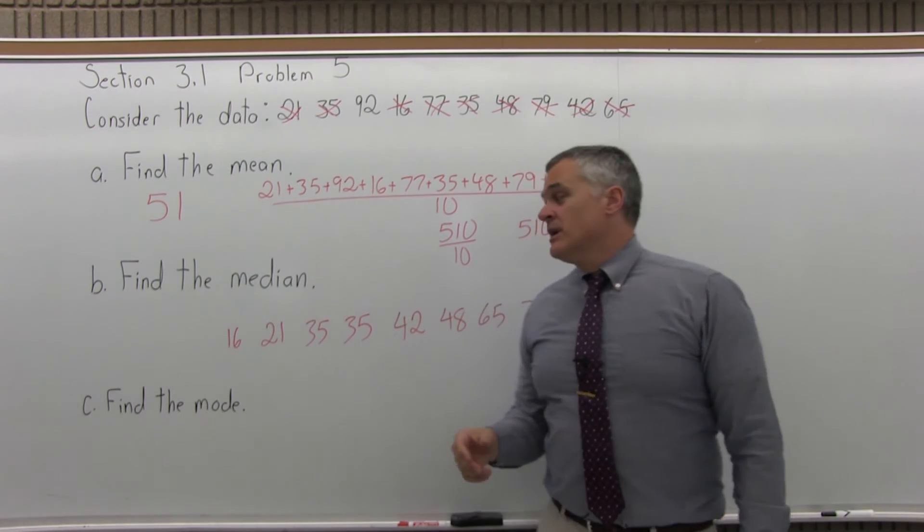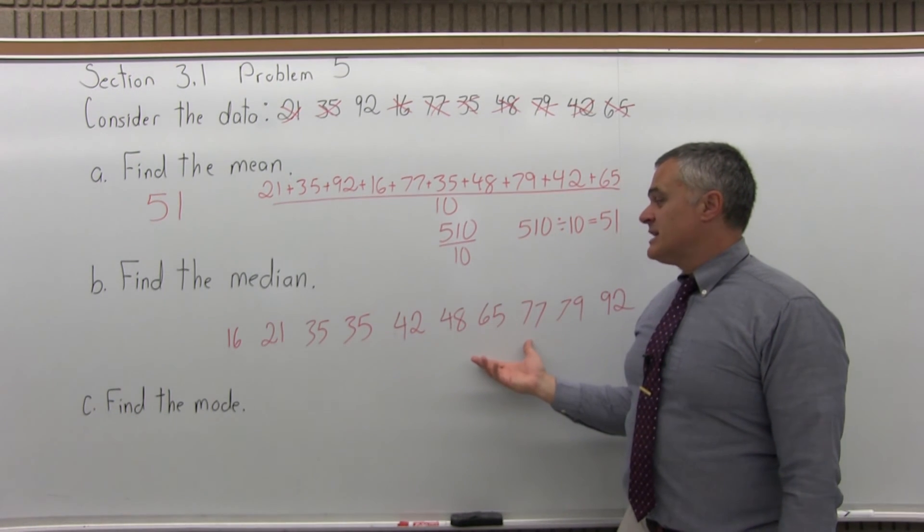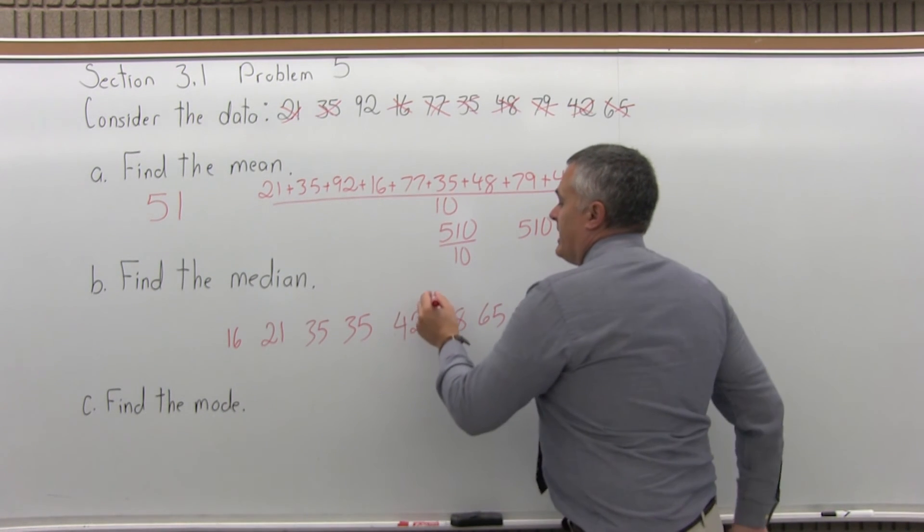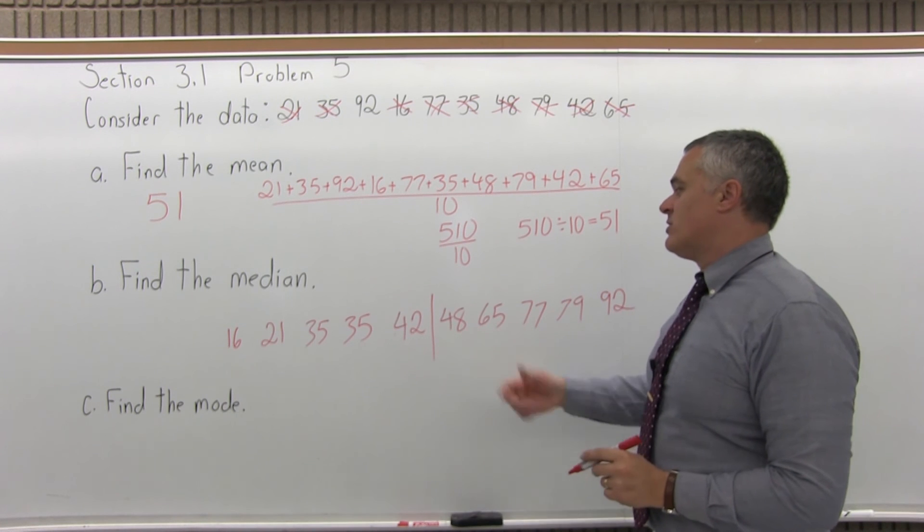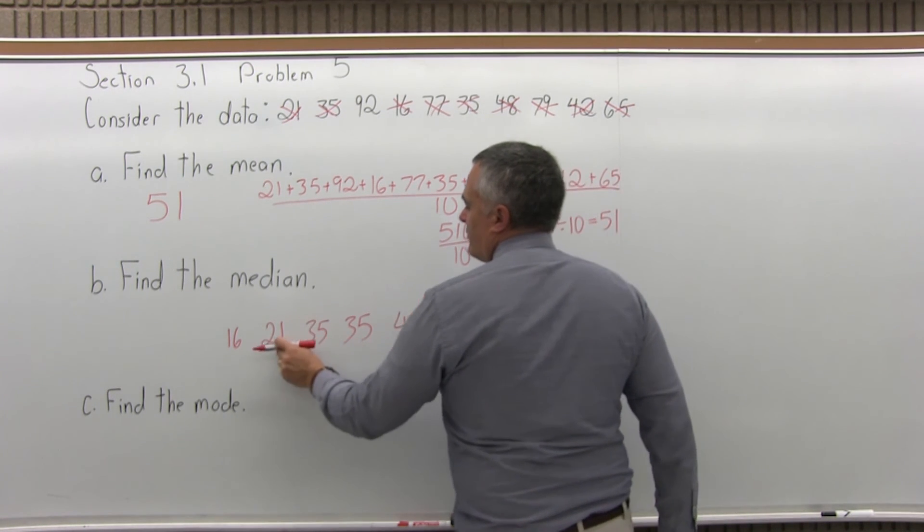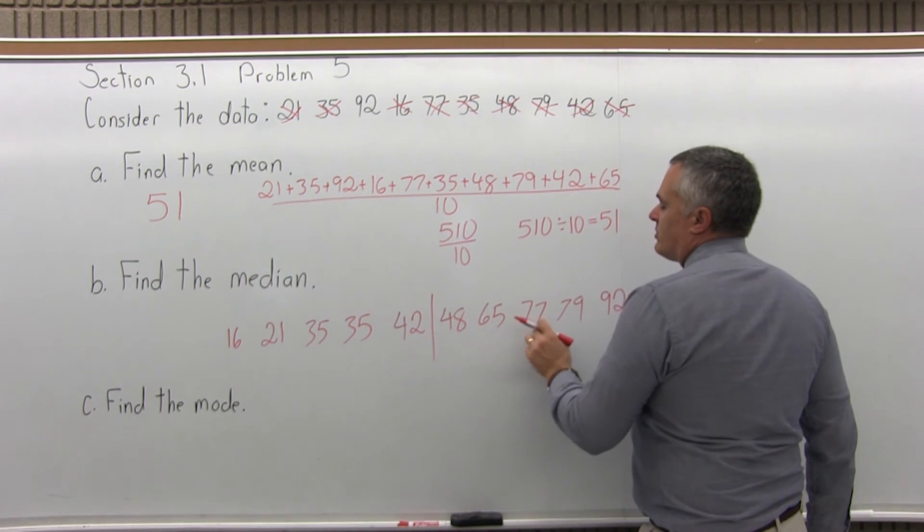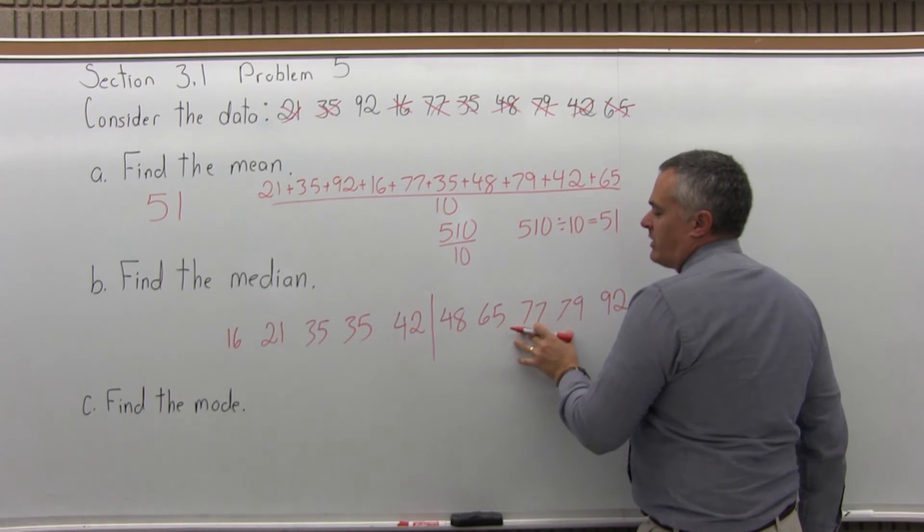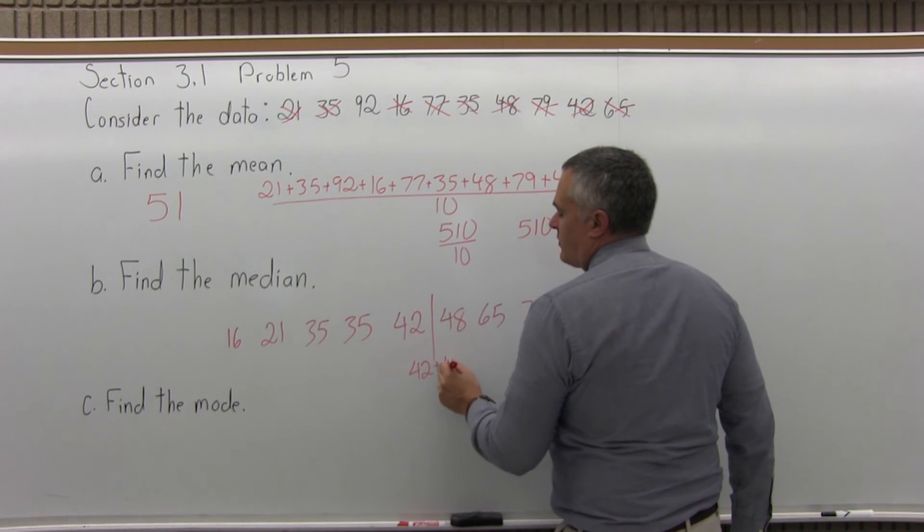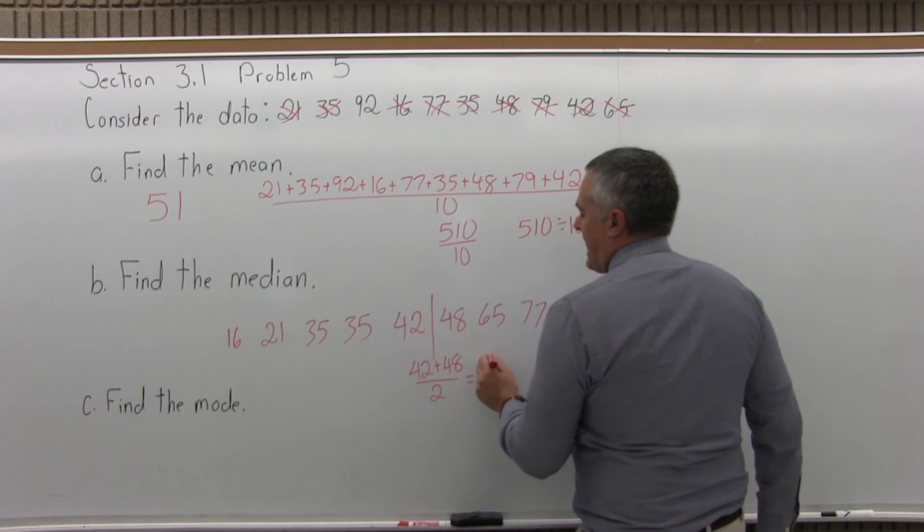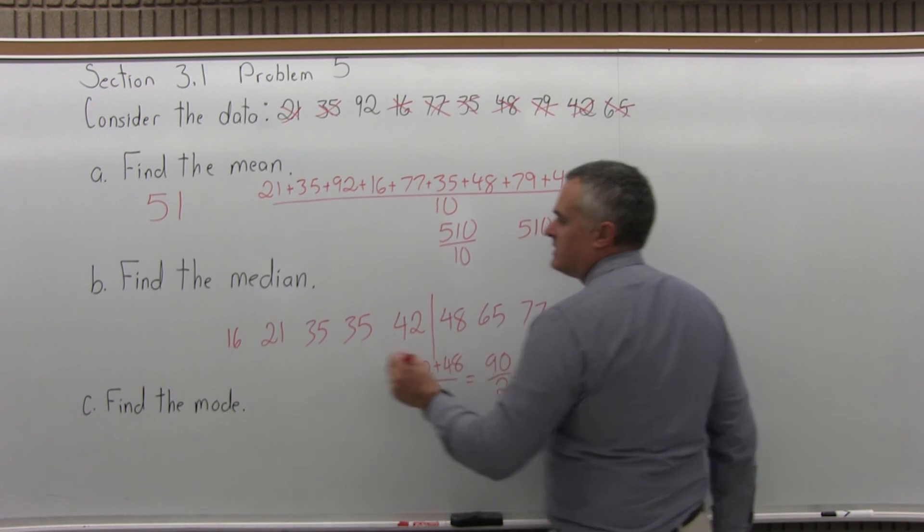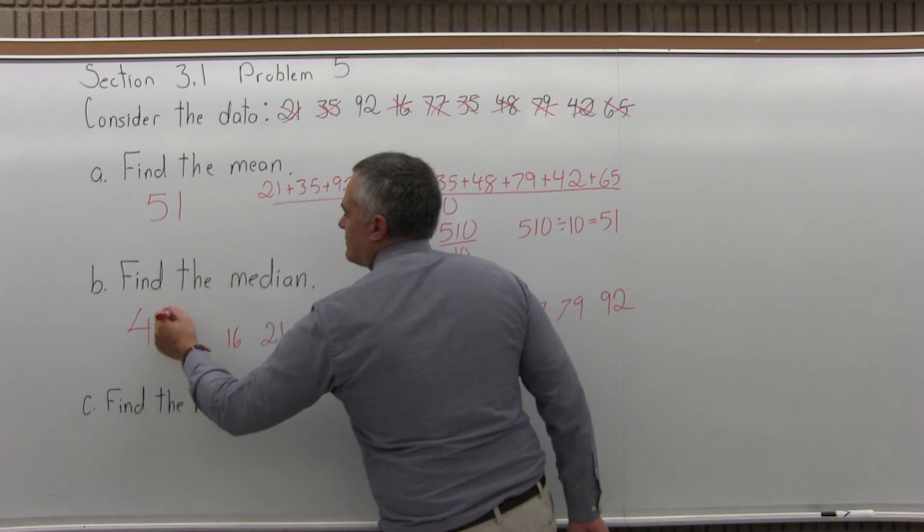Now that the list is in order, since there are 10 data values, 10 is even, I see that the middle of the list will occur between two data values, between the middle two, between the 42 and the 48. So that midway point here, I have 1, 2, 3, 4, 5 data values that are less, 1, 2, 3, 4, 5 data values that are more. So what's right in between 42 and 48? If I add 42 plus 48 over 2, that would be 90 over 2, which is 45. So the median is 45.